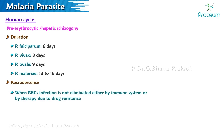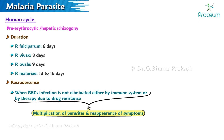Recrudescence occurs when red blood cell infection is not eliminated either by the immune system or by therapy due to drug resistance. It leads to multiplication of parasites and reappearance of symptoms. It is most common in Plasmodium falciparum but can occur in all species.